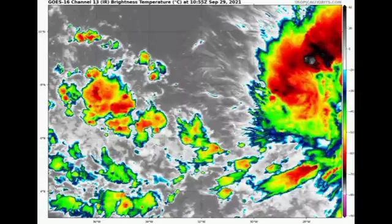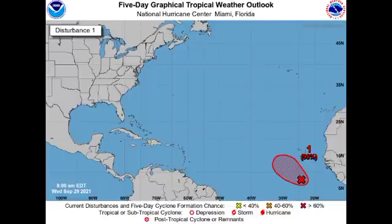We're just seeing some spots of shower and thunderstorm activity from 91L — nothing too significant. Moving on to Invest 90L, the formation chance is very high right now — a 90% chance for us to have a tropical cyclone. This is developing quite nicely, located basically to the south of the Cabo Verde islands, and it is expected to make its way to the northwest during the next couple of days.